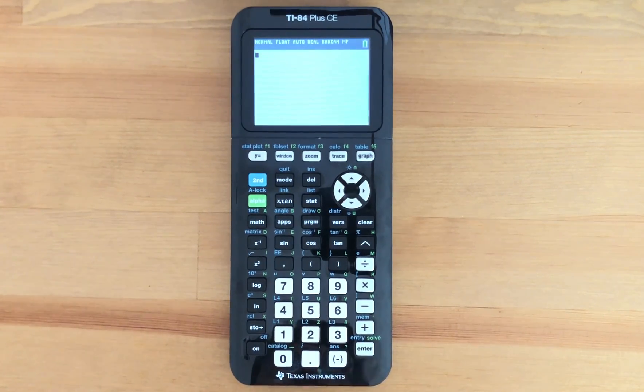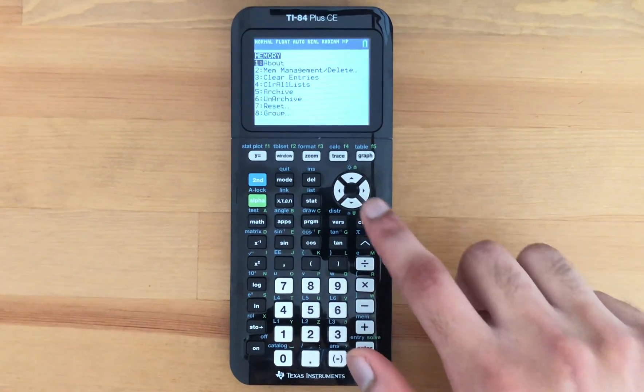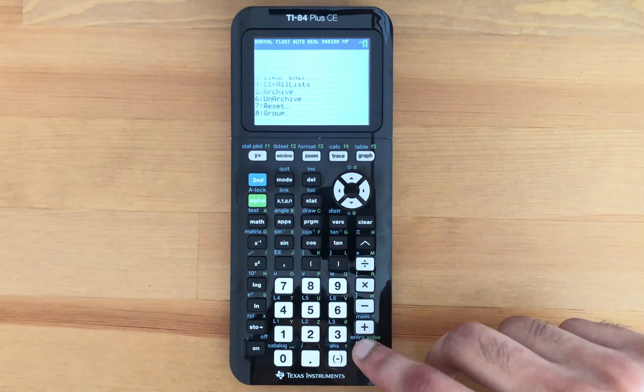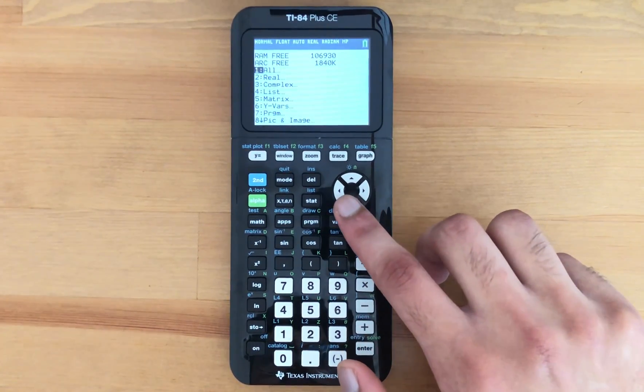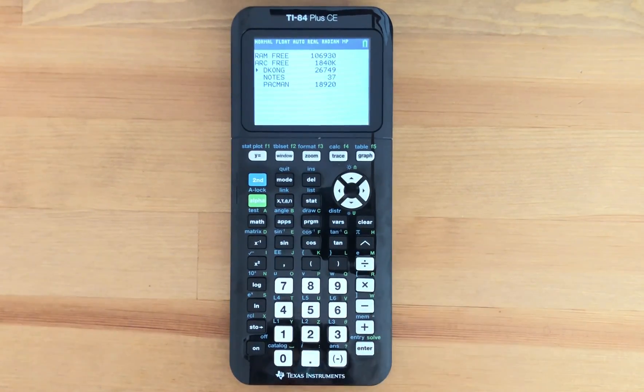What you want to do is press 2nd, then Memory, scroll down to number 2, Memory Management and Delete, and then scroll down to number 7, Program, and press Enter.